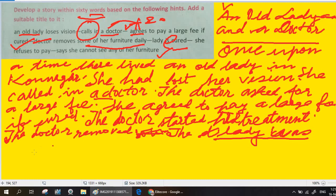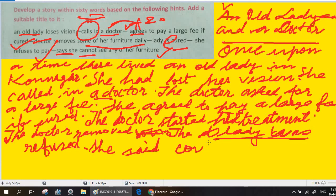She refused to pay. She said—S-A-I-D—she said she cannot, but 'could not.' Could not. She could not see any of her furniture. That's it. While she was cured, she did not see any of her furniture. Why? Because the doctor already removed them daily.